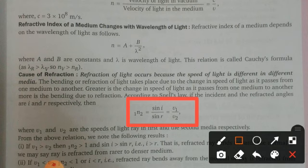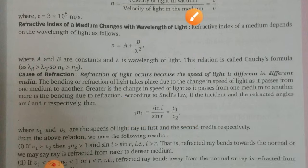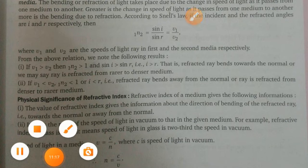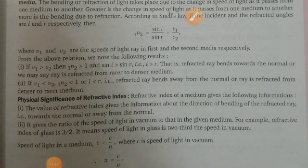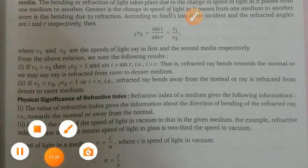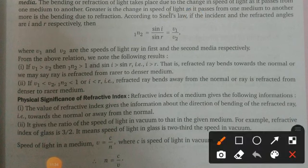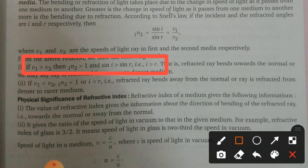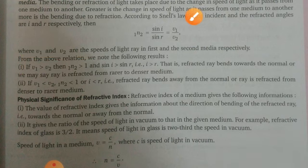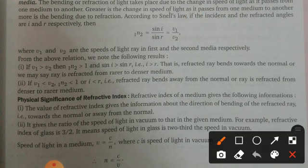From the above relations we note the following results. First, if v₁ is greater than v₂ — meaning the velocity of light in the first medium is greater than in the second medium — then the refractive index of the second medium with respect to the first is greater than 1, and sin i is greater than sin r, meaning the angle of incidence is greater than the angle of refraction. The refracted ray bends towards the normal — light refracts from rarer to denser medium.